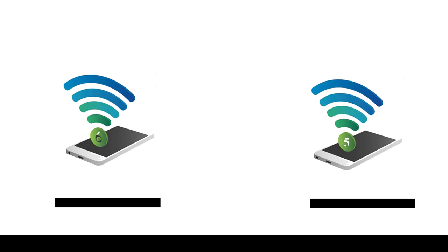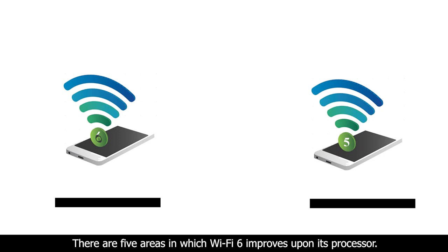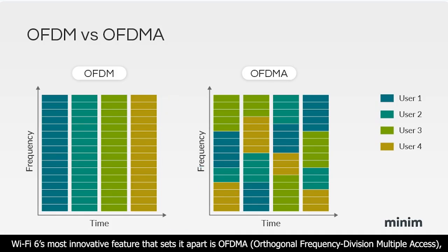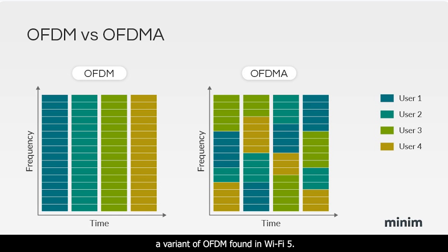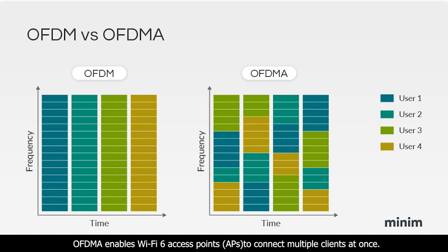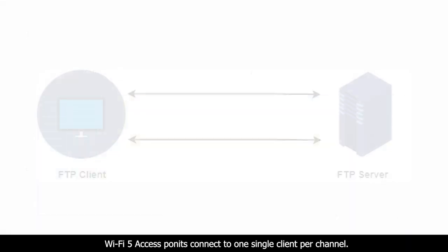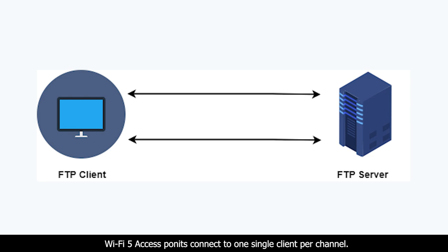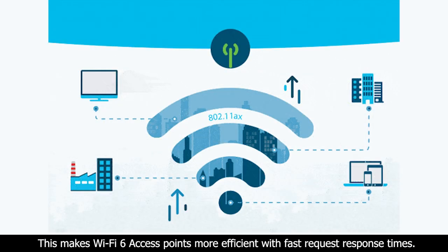There are five areas in which Wi-Fi 6 improves upon its predecessor. First, AP capacity: Wi-Fi 6's most innovative feature is OFDMA — Orthogonal Frequency Division Multiple Access — a variant of OFDM found in Wi-Fi 5. OFDMA enables Wi-Fi 6 access points to connect multiple clients at once, whereas Wi-Fi 5 access points connect to one single client per channel, making Wi-Fi 6 access points more efficient with faster request-response times.